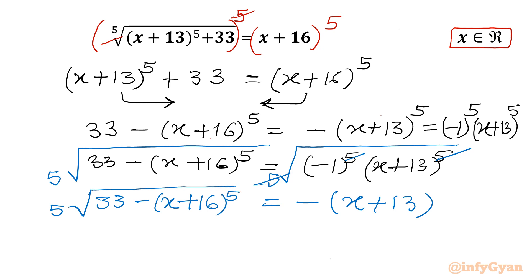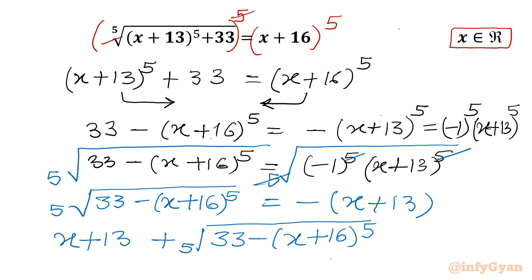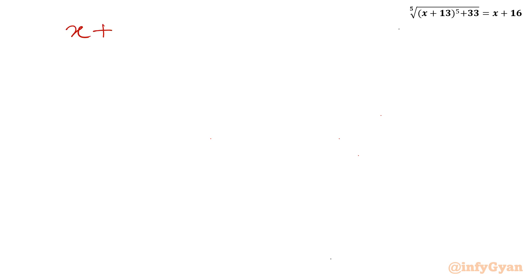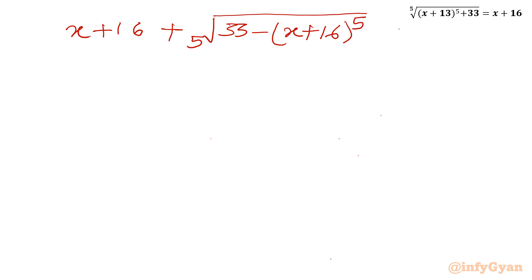Now I will take all terms to one side, writing: (x + 13) + 5th root of [33 − (x + 16)^5] = 0. Adding 3 to both sides causes the bracket to become (x + 16), giving us: (x + 16) + 5th root of [33 − (x + 16)^5] = 3.